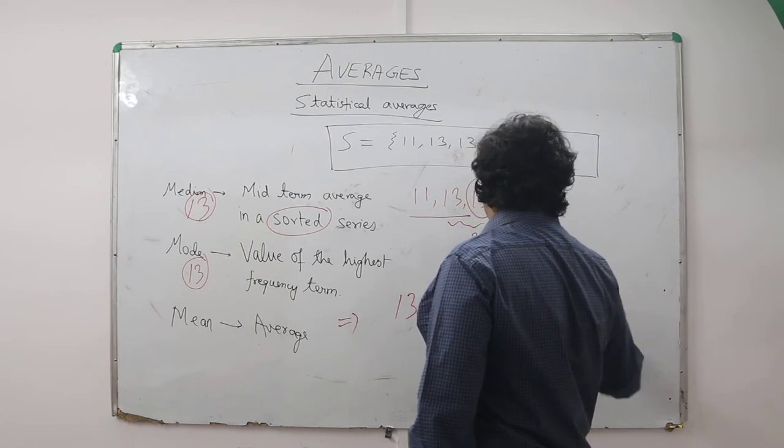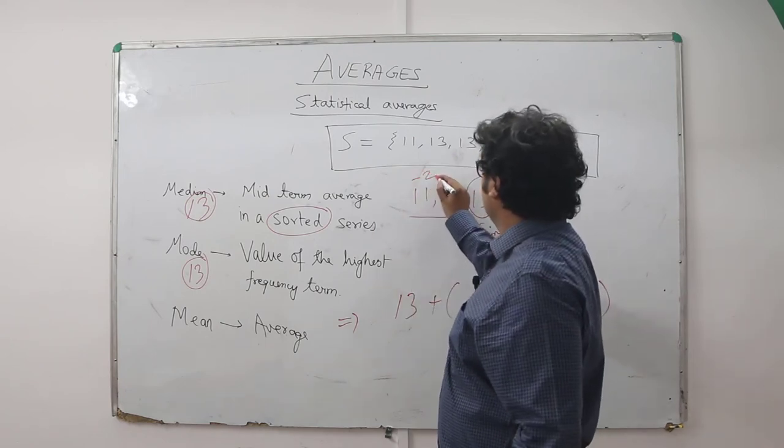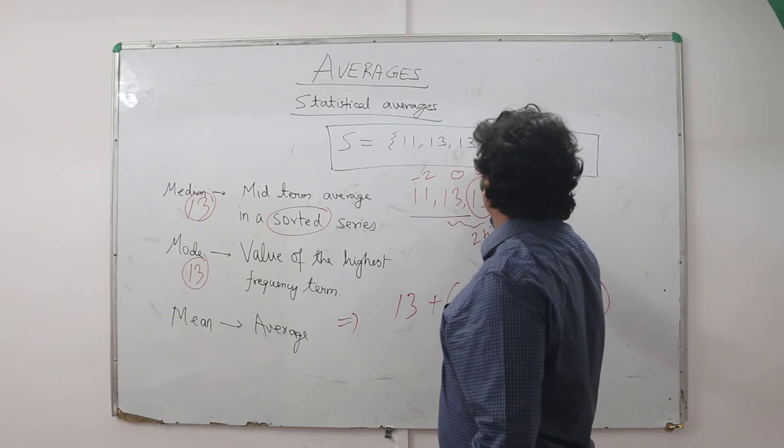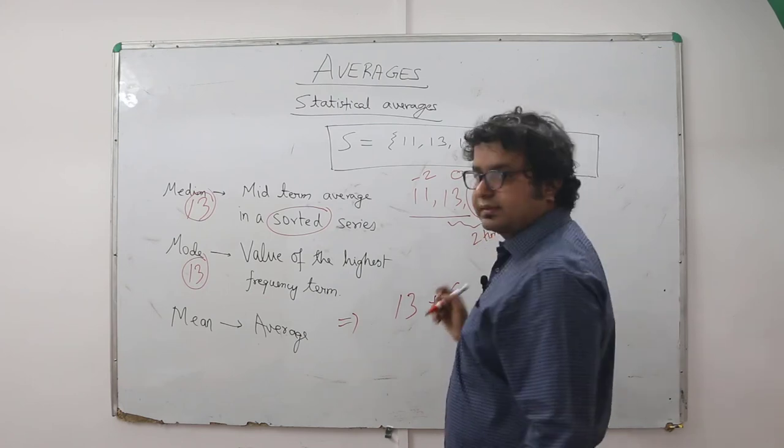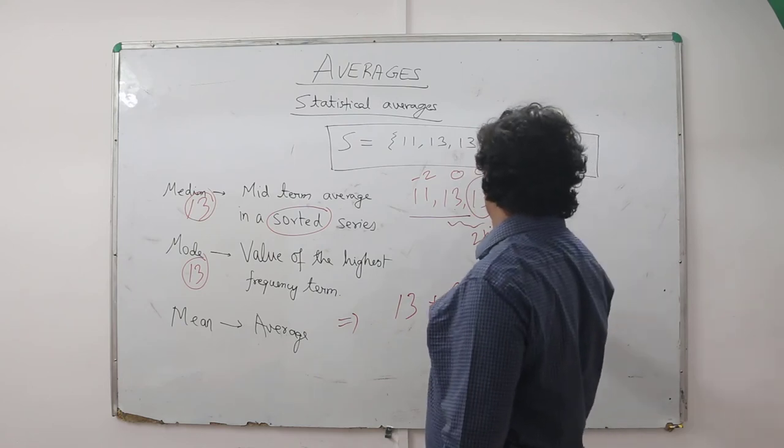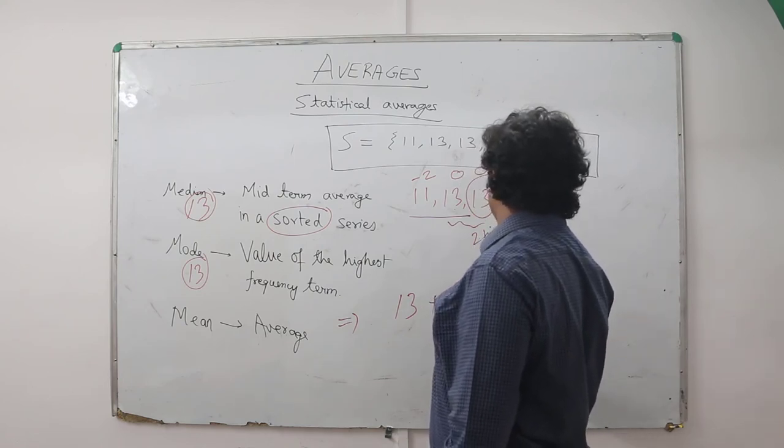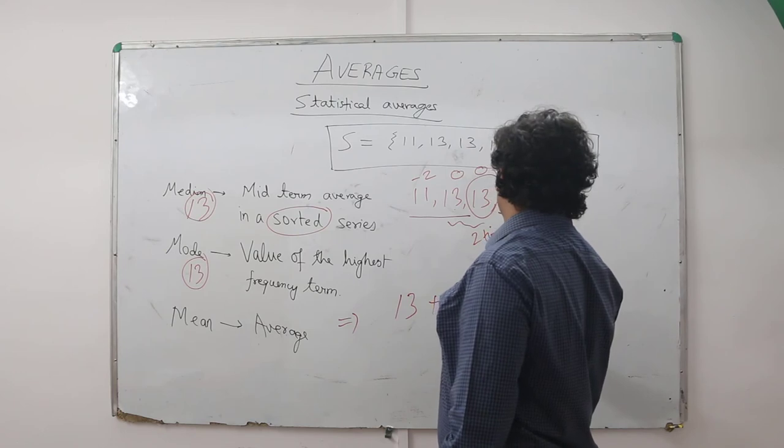Now, deviations: -2, 0, 0, +4, and +6. So what you get here is 13 plus 8 divided by 5, which equals 14.6.